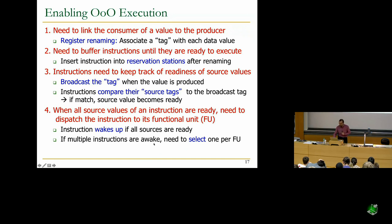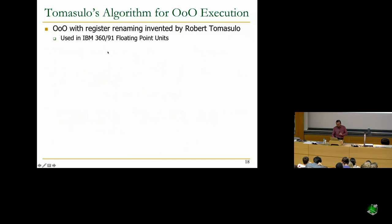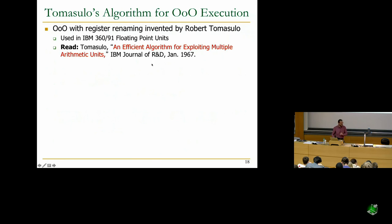If multiple instructions wake up at the same time, you select one instruction per functional unit. This is called the wake-up and select logic. All existing machines have this machinery in slightly different ways. This was first invented by Robert Tomasulo at IBM in 1965, used in the IBM 360/91 floating point units. We're going to simulate a version of his algorithm.